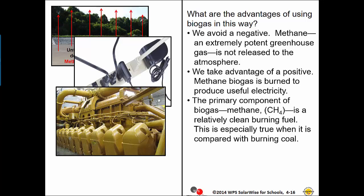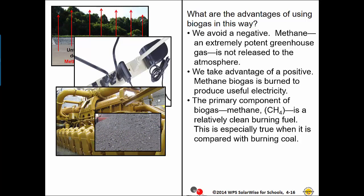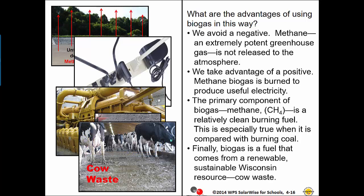The primary component of biogas, methane, is a relatively clean burning fuel. This is especially true when compared with burning coal. And finally, biogas is a fuel that comes from a renewable, sustainable Wisconsin resource: cow waste.